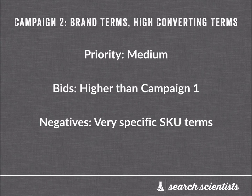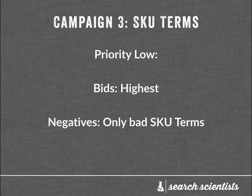Campaign two: your brand terms and high-converting terms, priority medium, bids should be higher than campaign one, negatives — very specific SKU terms. And in campaign three: your SKU terms, priority low, bids the highest, negatives — only bad SKU terms, which there probably aren't any.